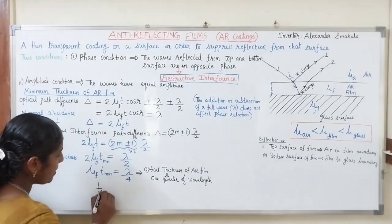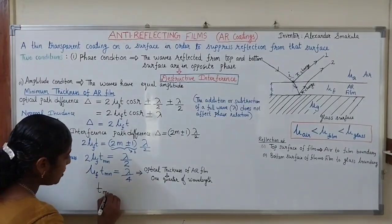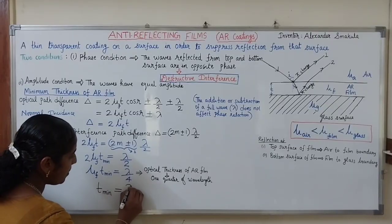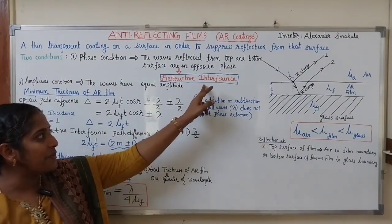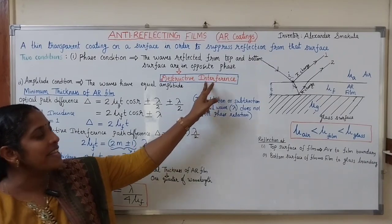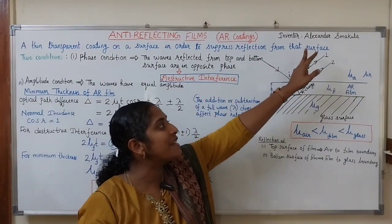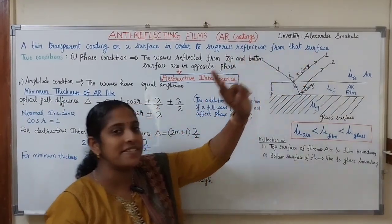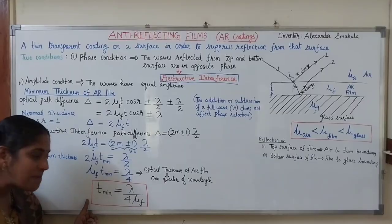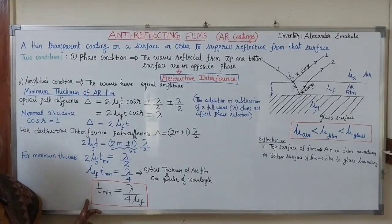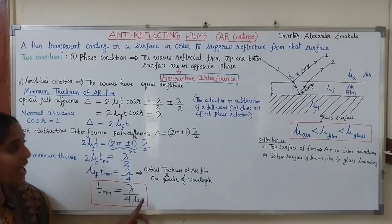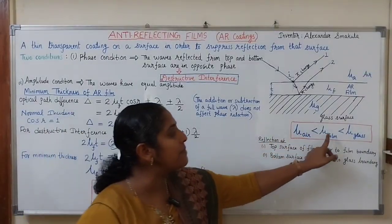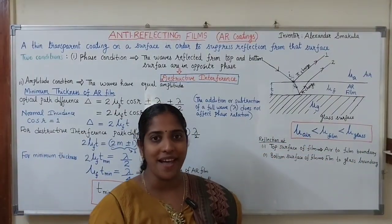Therefore, T_min = λ / (4μF). To obtain destructive interference and suppress reflection, the AR film must have a minimum thickness equal to λ/(4μF), and its refractive index μ_film must be less than the refractive index of the glass substrate μ_glass.